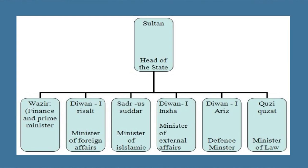The key ministers included: the Wazir, who served as Finance and Prime Minister under the Diwan-e-Wazir; the Diwan-e-Risalat, Minister of Foreign Affairs; the Sadar-us-Sadr, overseeing Islamic affairs; and the Diwan-e-Insha, Minister of External Affairs.